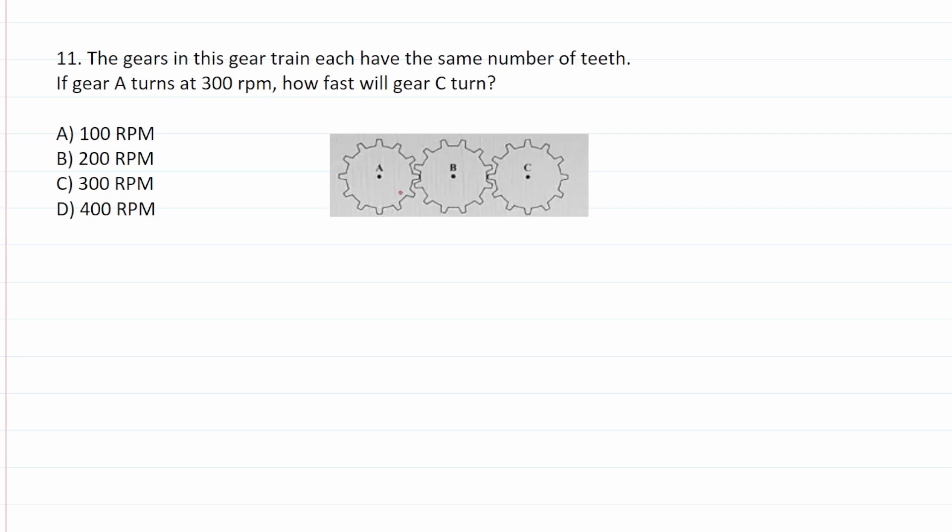Number 11 says the gears in this gear train each have the same number of teeth. If gear A turns at 300 RPMs, revolutions per minute, how fast will gear C turn? So if all these gears have the same teeth, they all have the same gear ratio. That means if gear A spins at 300 RPMs, gear B is also going to spin at 300 RPMs, and gear C is also going to spin at 300 RPMs. The answer to this one is C. As you'll see in just a minute, we're going to calculate different gear ratios and see how that affects how fast different gears turn. So just sit tight. We'll get to a different example. But this one is to point out the fact that if the gears have the same number of teeth, they're going to be spinning at the same rate.